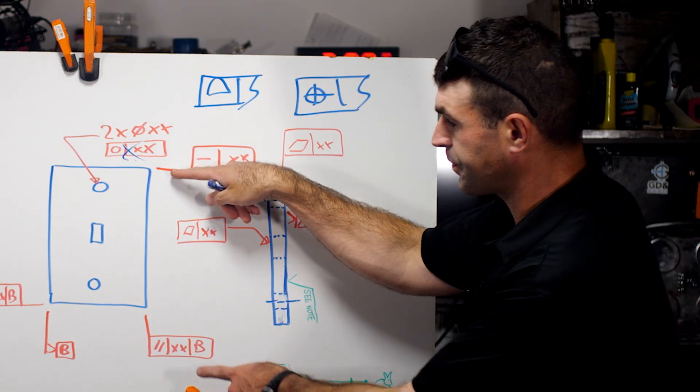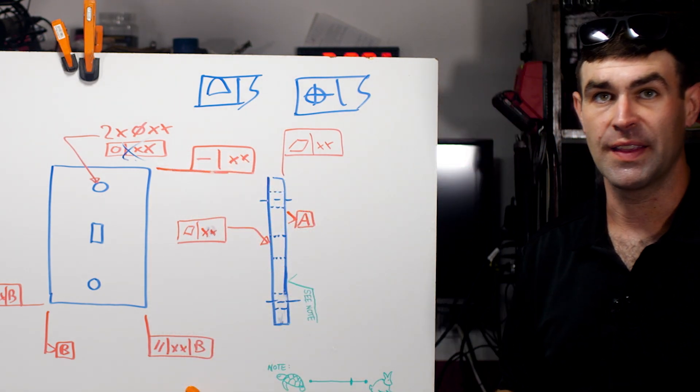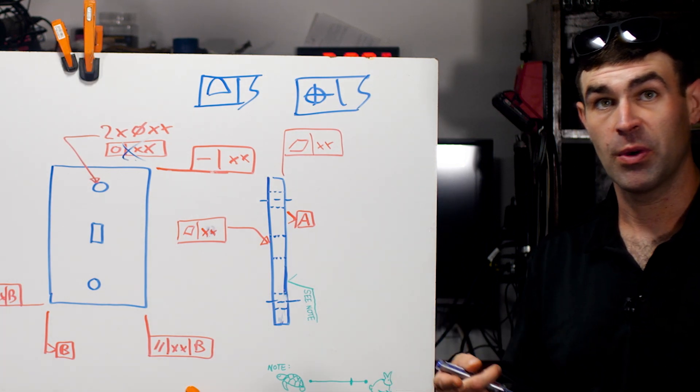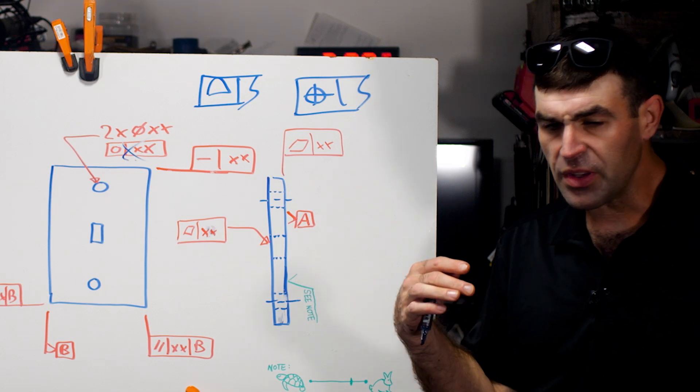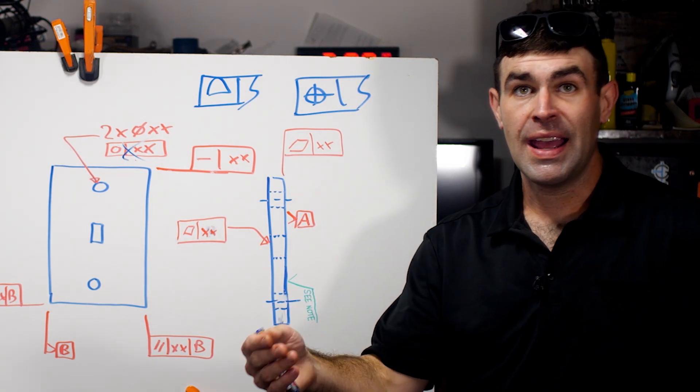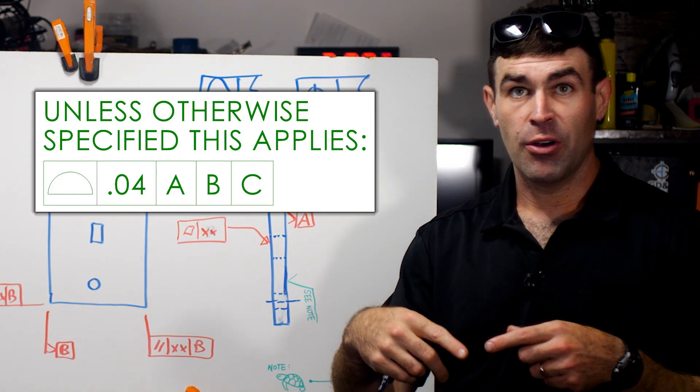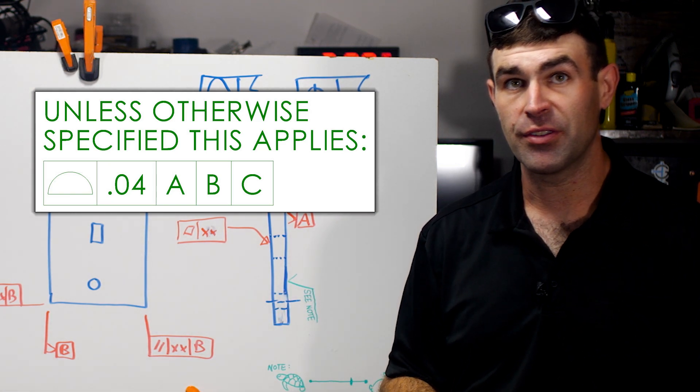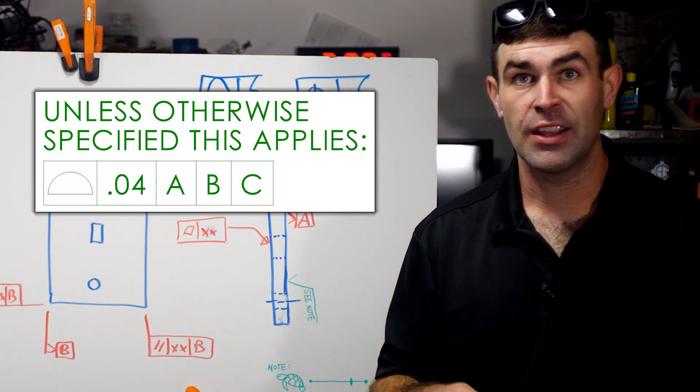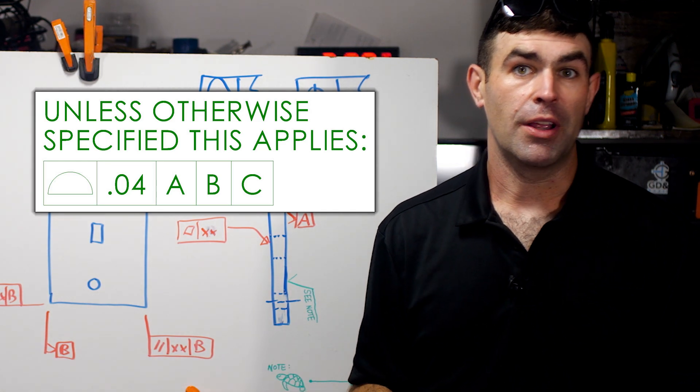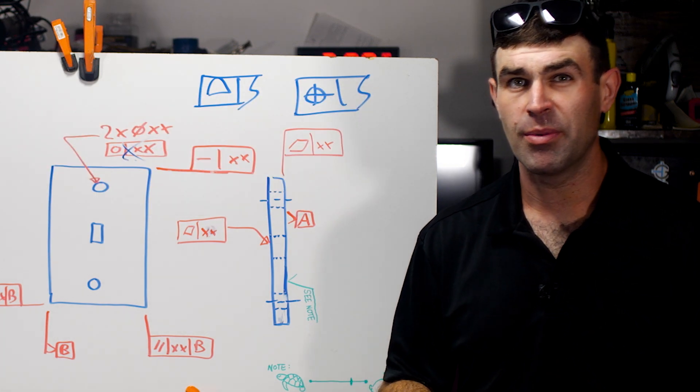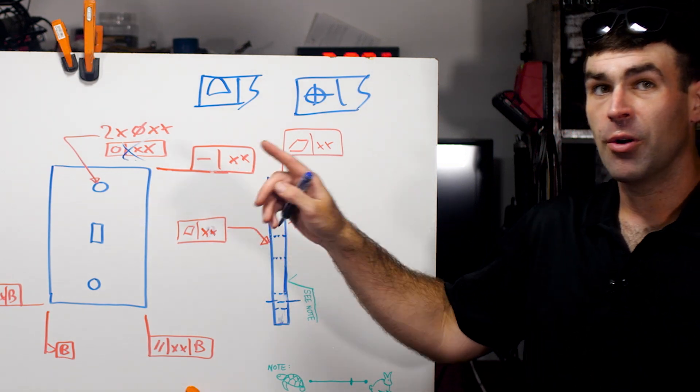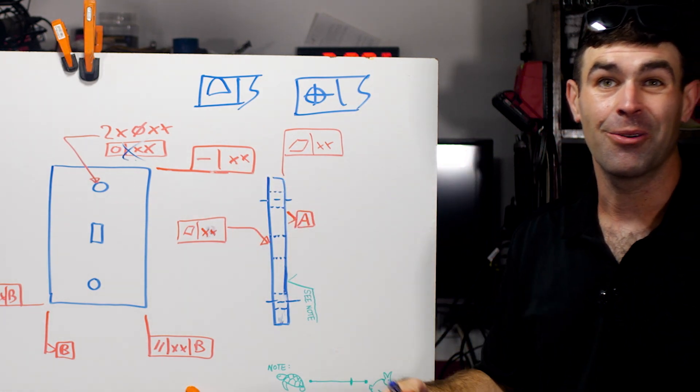Because there will be some kind of other tolerance controlling that, whether it's a profile of the surface or your general tolerances. Depending on your company, you might already have a profile, unless otherwise specified to some ABC generic datum reference frame, and that would already be controlling the straightness. If not, you probably have plus or minus dimensions. And via rule number one, you control the straightness of that surface to an extent. So we typically don't want to do this unless there's some reason to.